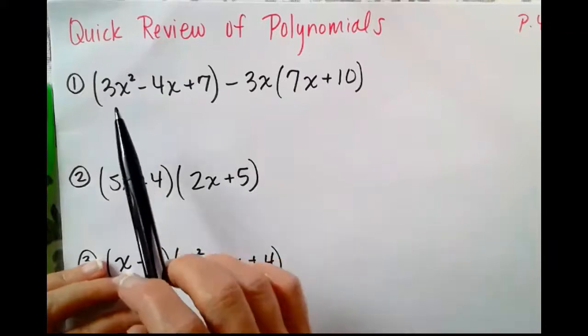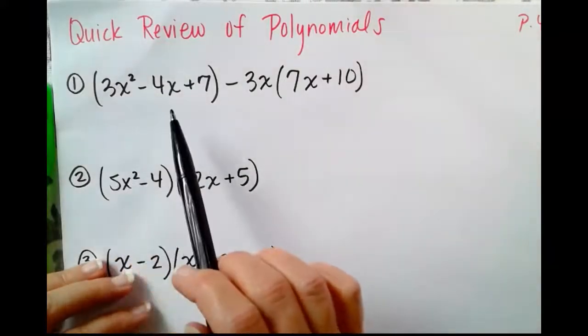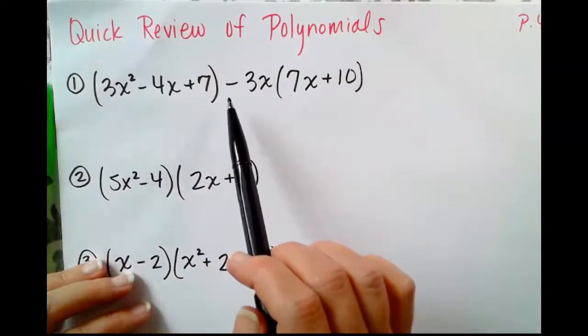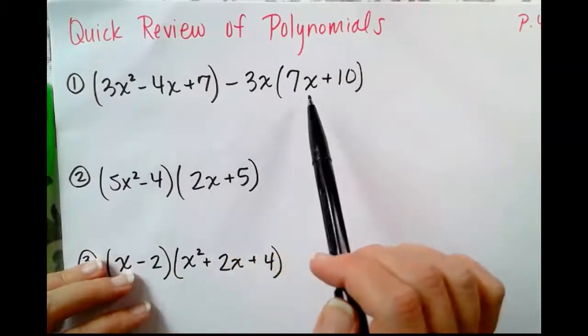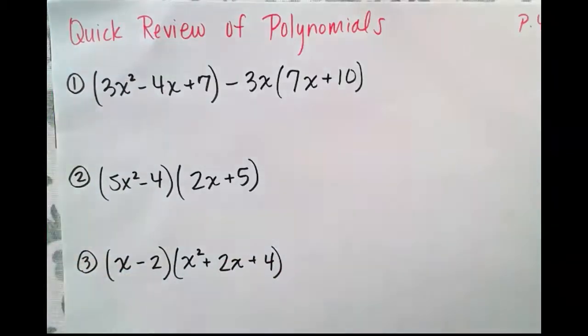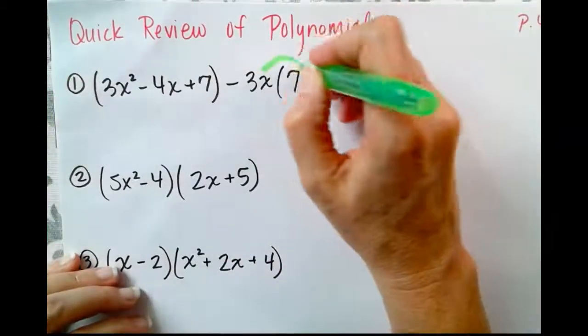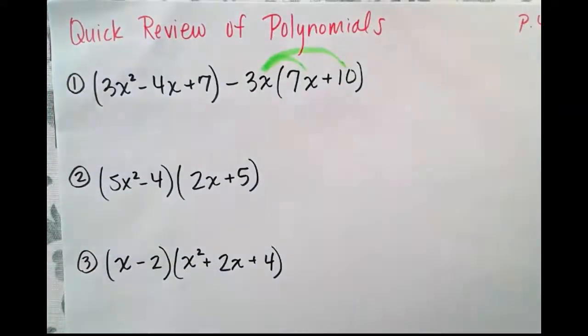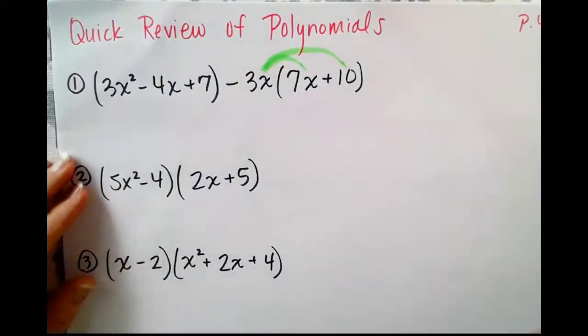We have the trinomial 3x squared minus 4x plus 7 minus 3x times the binomial 7x plus 10. We need to use the distributive property here, and then we will combine like terms.